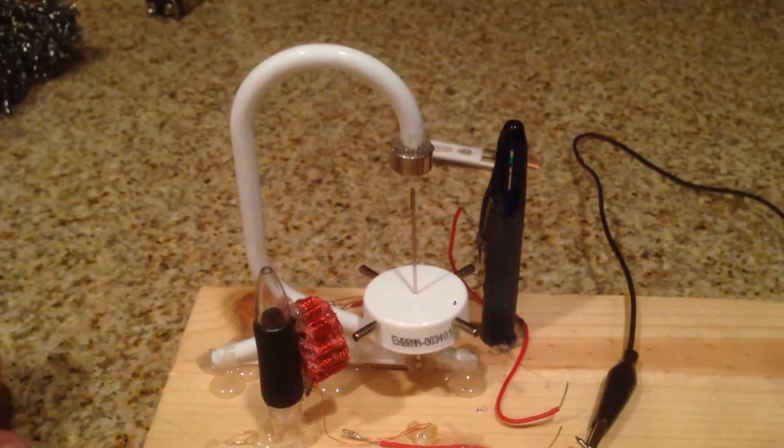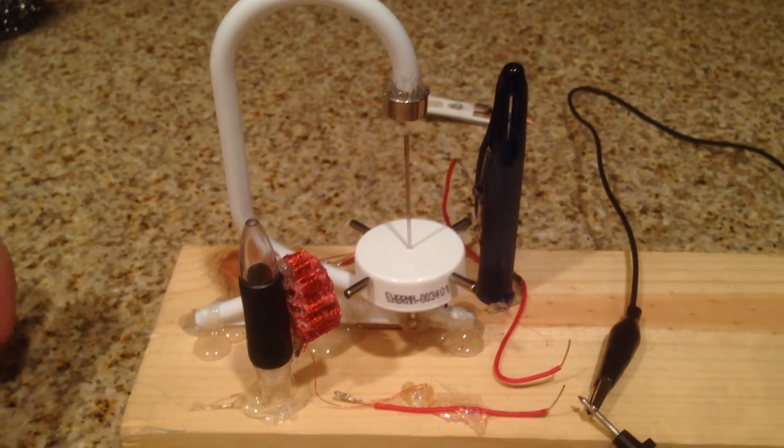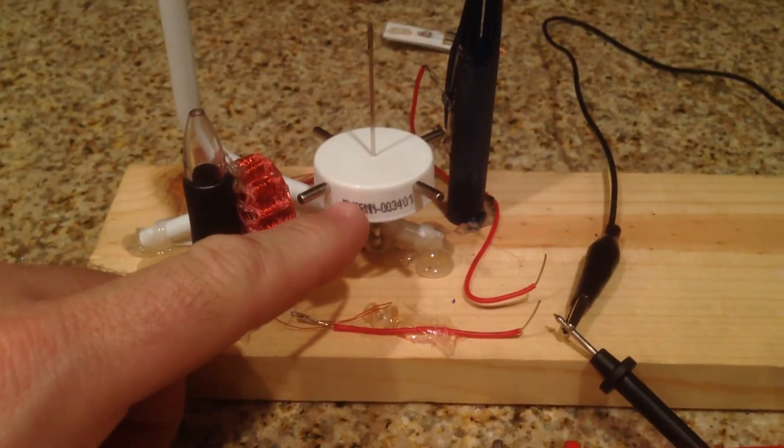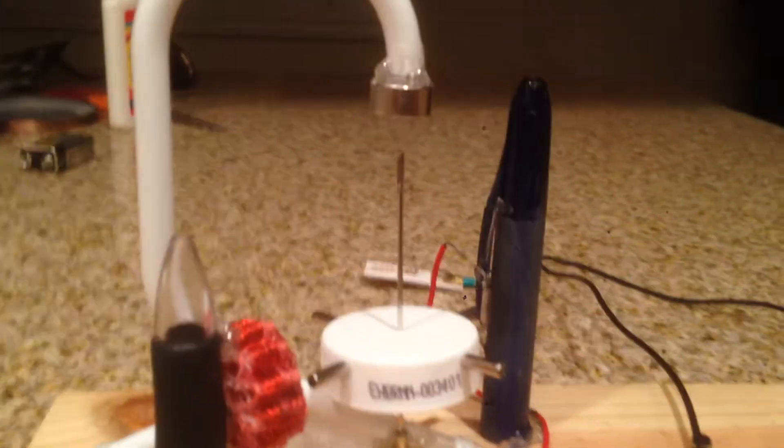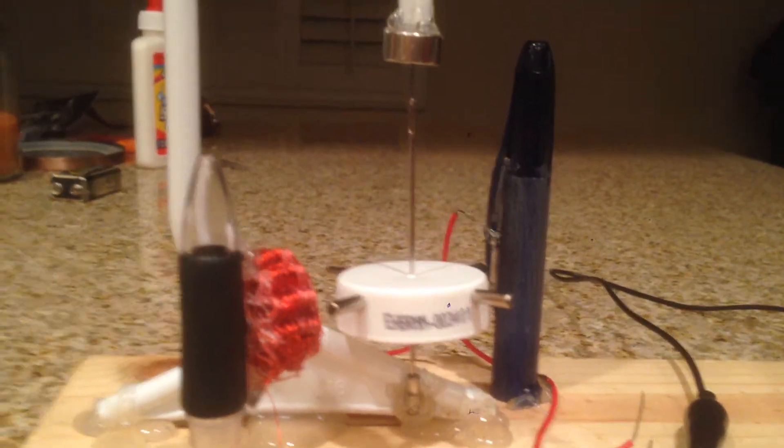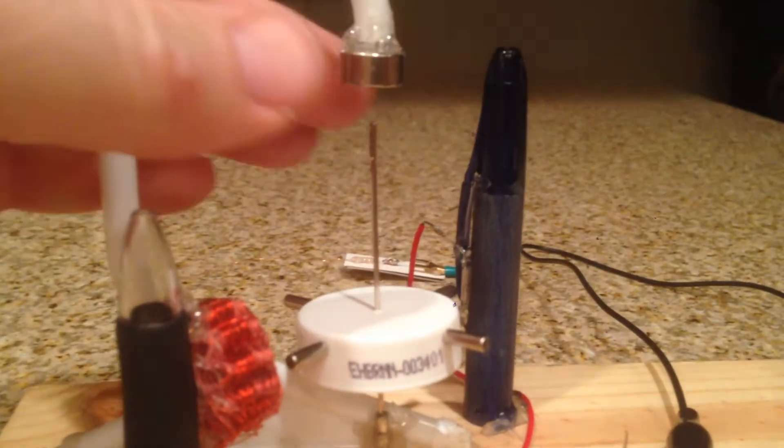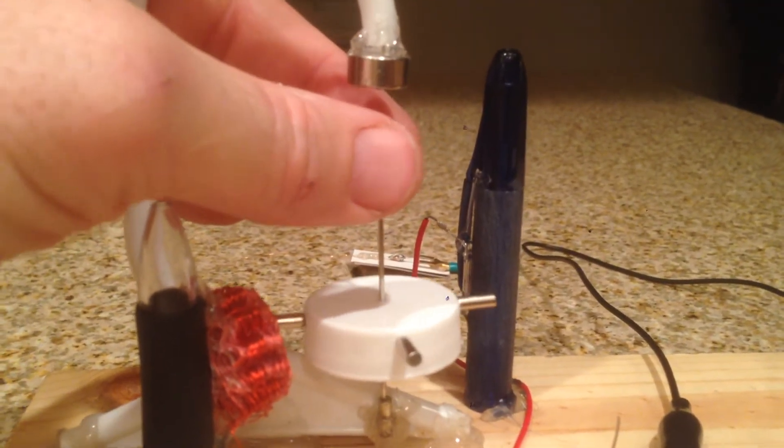You can pretty much see how it's made. There's a coat hanger and a pin for the skeletal structure. The rotor is just a bubble cap lid and a needle running through the center. There are two magnets - you can see a small one on the bottom and a large one on top with an air gap there. That spins really freely with very little friction.